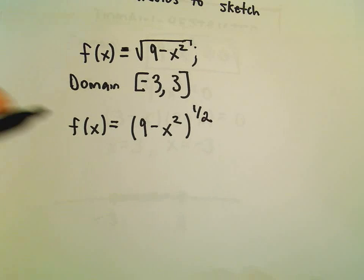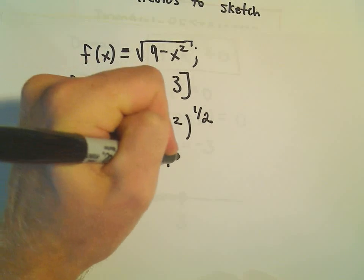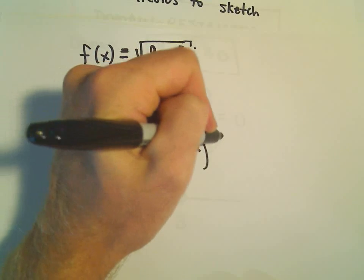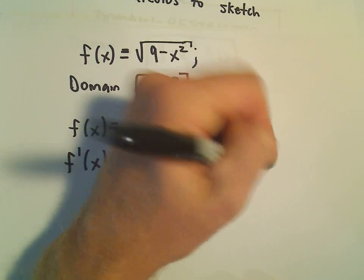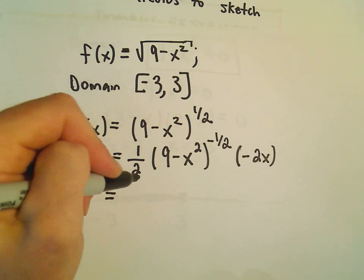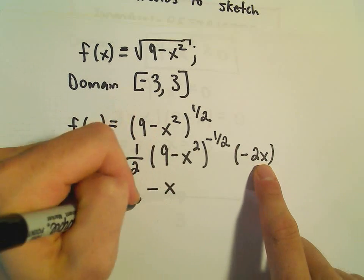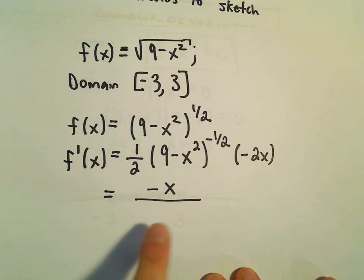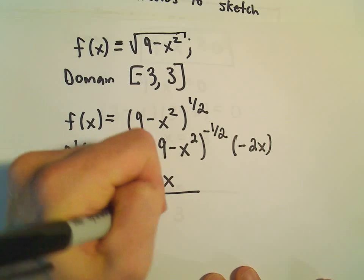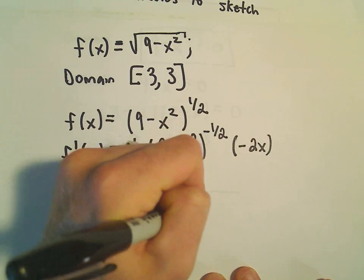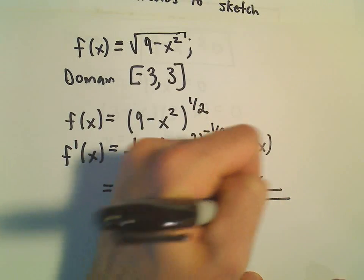Taking the derivative, the 1/2 comes out front. We have (9 minus x squared) to the power of negative 1/2, multiplied by the derivative of the inside, which is negative 2x. Simplifying: 1/2 times 2 gives 1, leaving us with negative x. Moving the (9 minus x squared) to the negative 1/2 into the denominator gives us f prime of x equals negative x over the square root of 9 minus x squared.